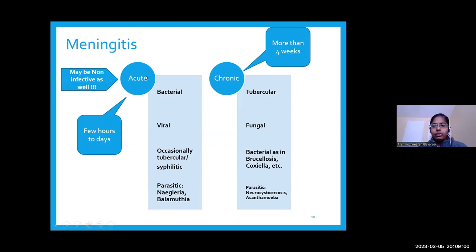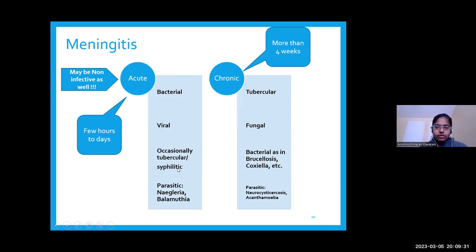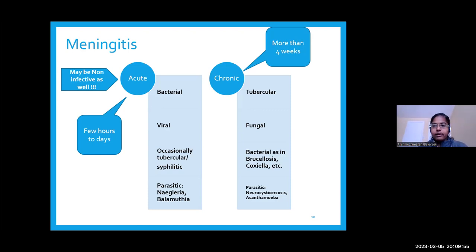We should always keep in mind whether an acute presentation is actually an acute presentation of a chronic illness. While bacterial meningitis is our topic today, we may also encounter viral meningitis. Occasionally, tubercular or syphilitic meningitis may have an acute, fulminant onset. Parasitic infections like Naegleria and Balamuthia should also be kept in mind, though we will start treatment for bacterial pathogens first.